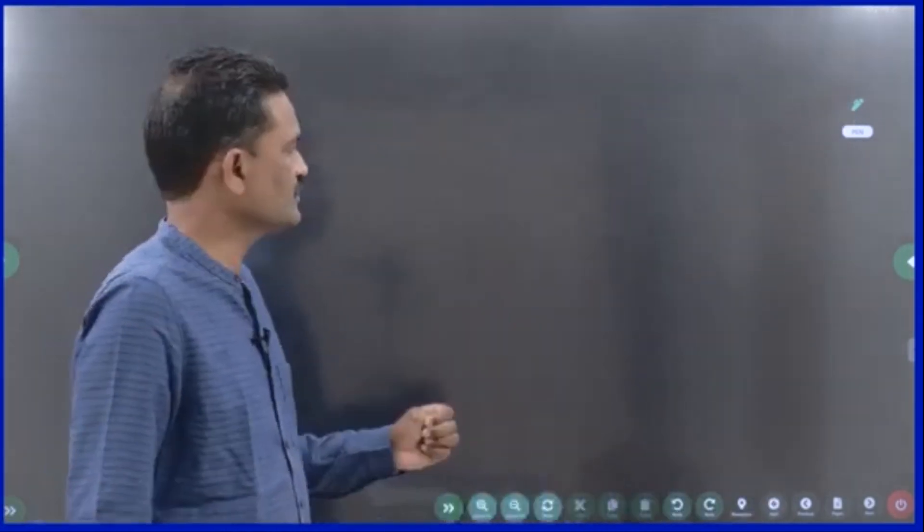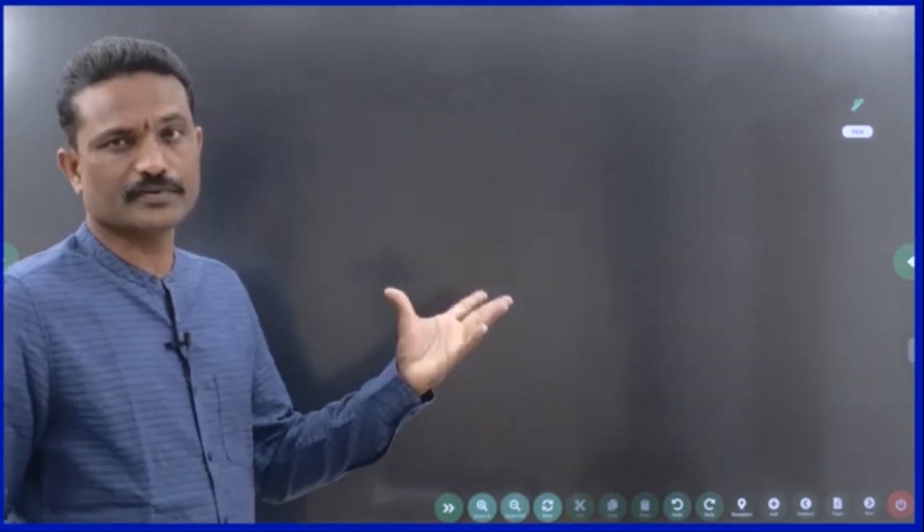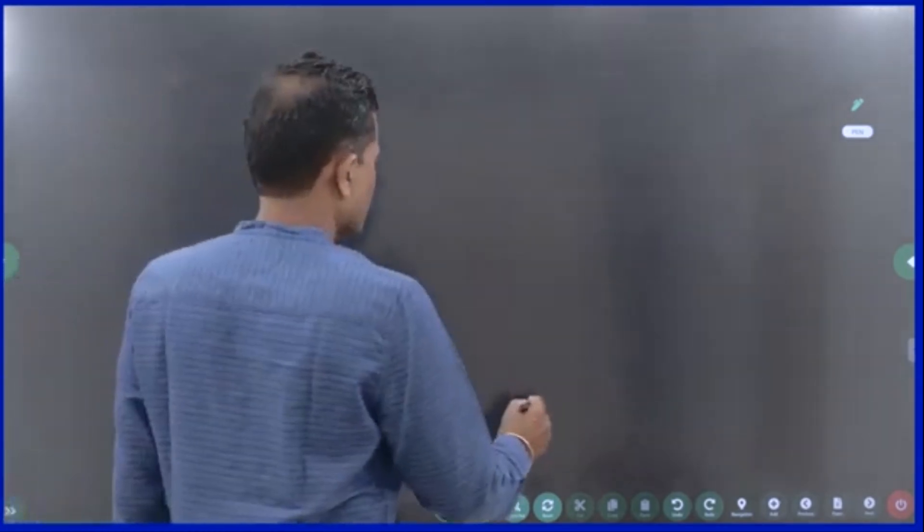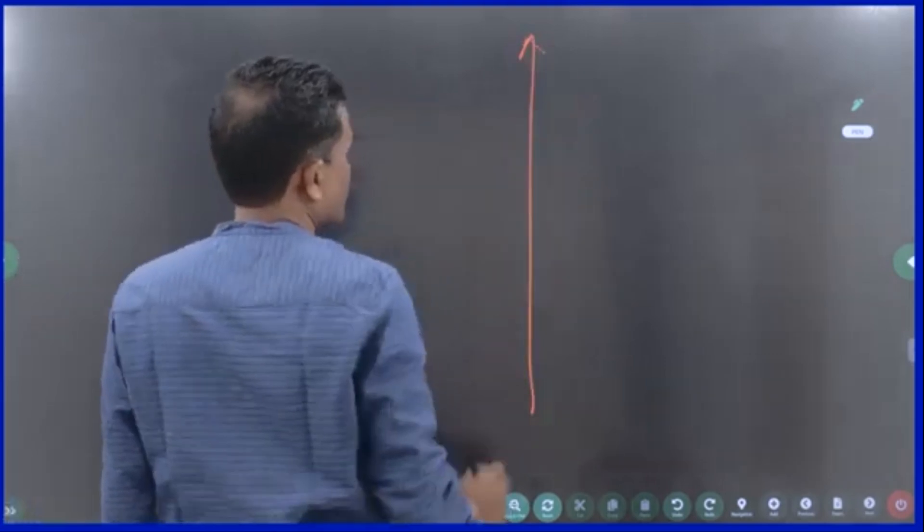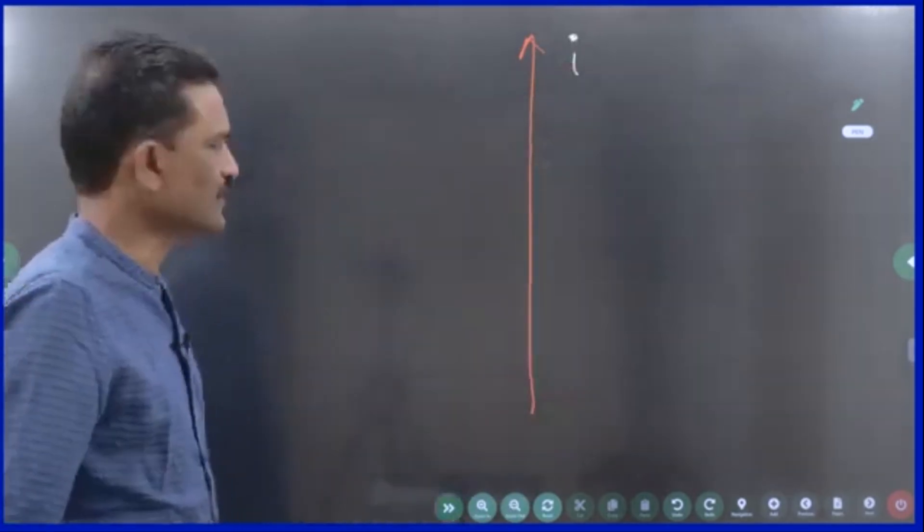Just now we read that we came to know that a current carrying wire produces magnetic field. Is this clear? So, a wire is there in which current is flowing, the current i is flowing.